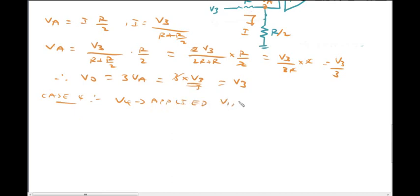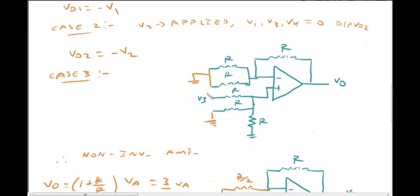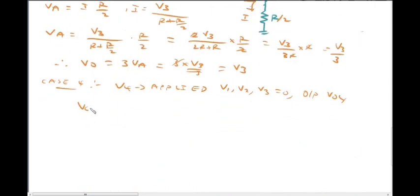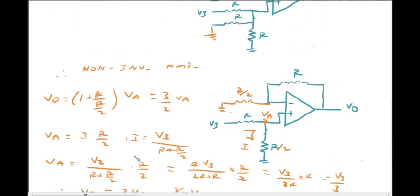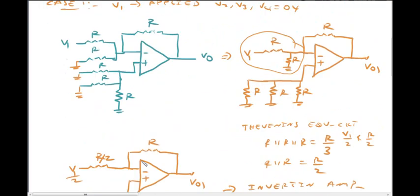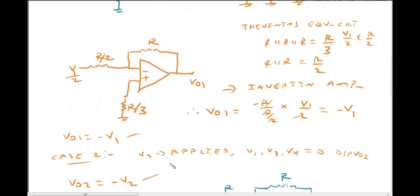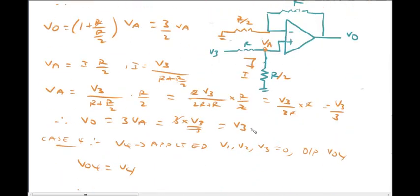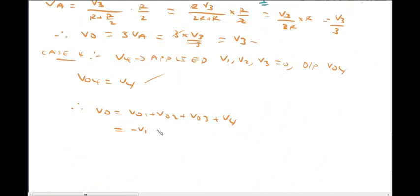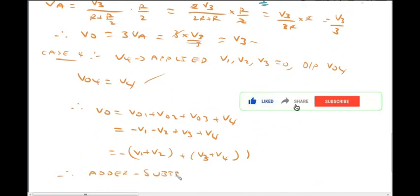In Case 4, V4 is applied similarly, giving V04 equals V4. According to the Superposition theorem, the total output is V0 equals V01 plus V02 plus V03 plus V04, which gives V0 equals minus V1 minus V2 plus V3 plus V4. This circuit therefore acts as both an adder and a subtractor.